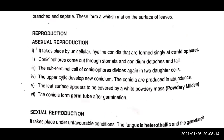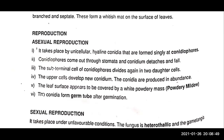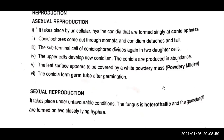In asexual reproduction, unicellular hyaline conidial force comes out through the stomata and conidia detach and fall. The sub-terminal cell of the conidiophore divides again into additional cells. The upper cells develop new conidia. Conidia are produced in abundance, and the leaf surface appears to be covered by a white powdery mass.